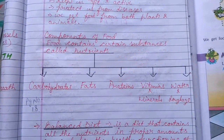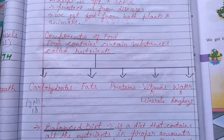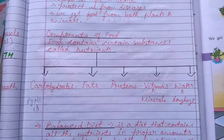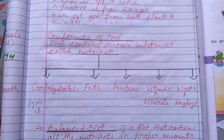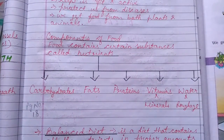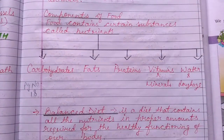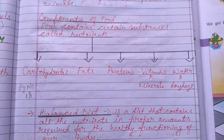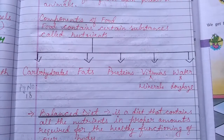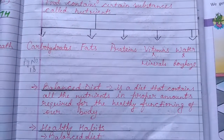The next important subtopic was about components of food. Food contains certain substances called nutrients, and the names of those five nutrients are carbohydrates, fats, proteins, vitamins, and minerals — including water and roughage.